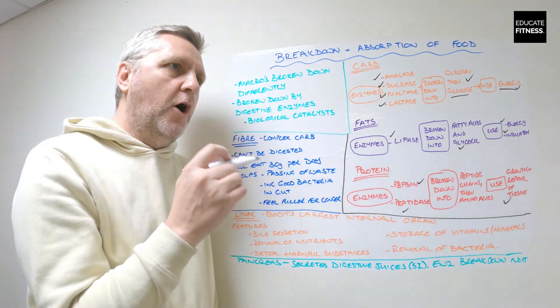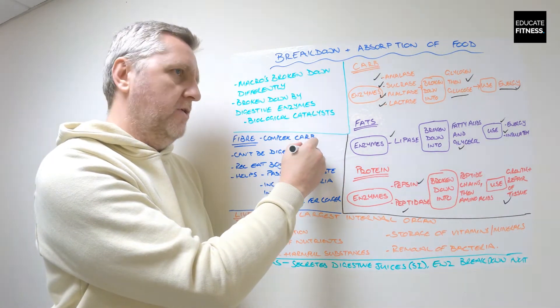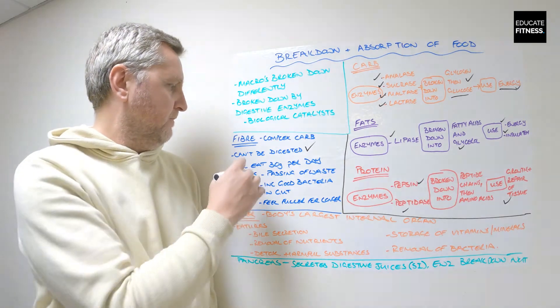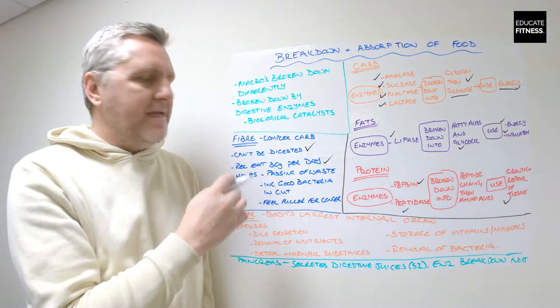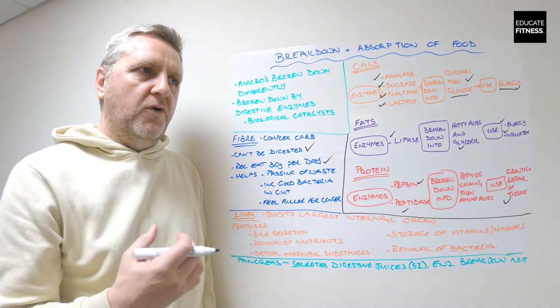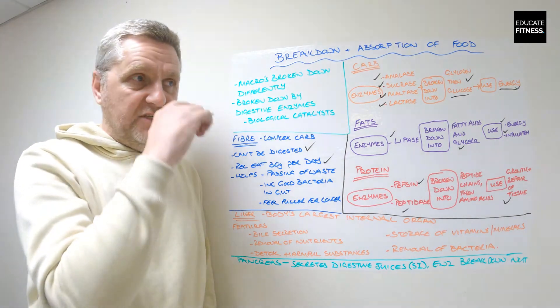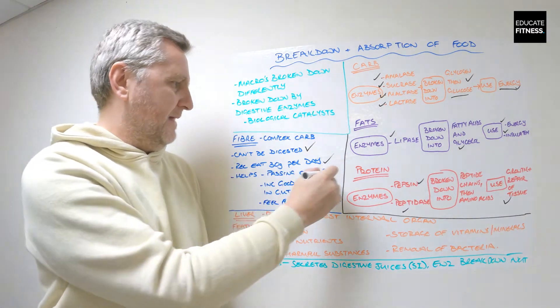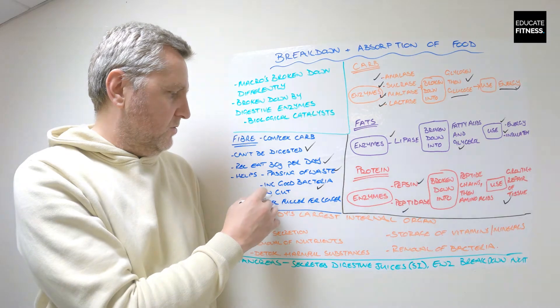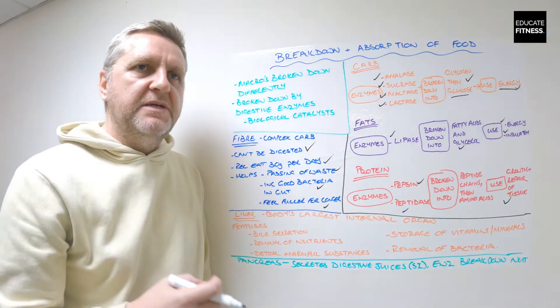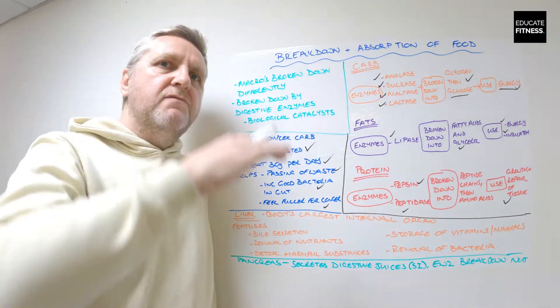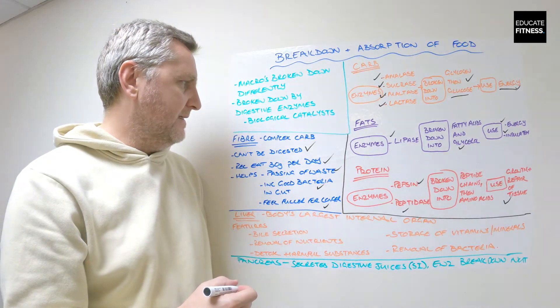So fiber is a complex carb which can't be digested. It's found in things like fruits, vegetables, whole grains and cereals. It's recommended that we eat 30 grams of fiber each day because it is vital for the functions of the digestive system. It helps the passing of waste, includes good bacteria in the gut, and it helps you feel fuller for longer, which means you don't get sugar cravings, which reduces the risk of type 2 diabetes.